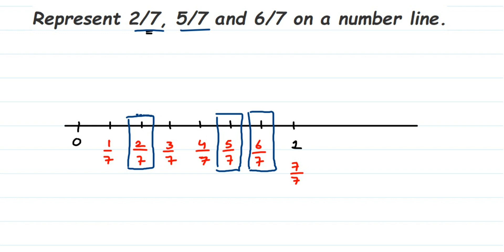Just make sure that whatever denominator you have, divide the number line between 0 and 1 into that many parts. This only works if it's a proper fraction. If it's an improper fraction, it will not lie between 0 and 1 — it will lie between some other numbers, which you'd need to check. I hope this question is clear. If you have any other question or doubt, drop a comment. Thank you so much for watching.